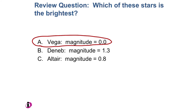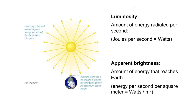Moving on, we've talked about brightness and how we measure it in astronomy. We've also mentioned luminosity in this class. It's time to bring those two concepts together, really understand the difference between them, and also how they're related. Here are the basic definitions of luminosity and apparent brightness.